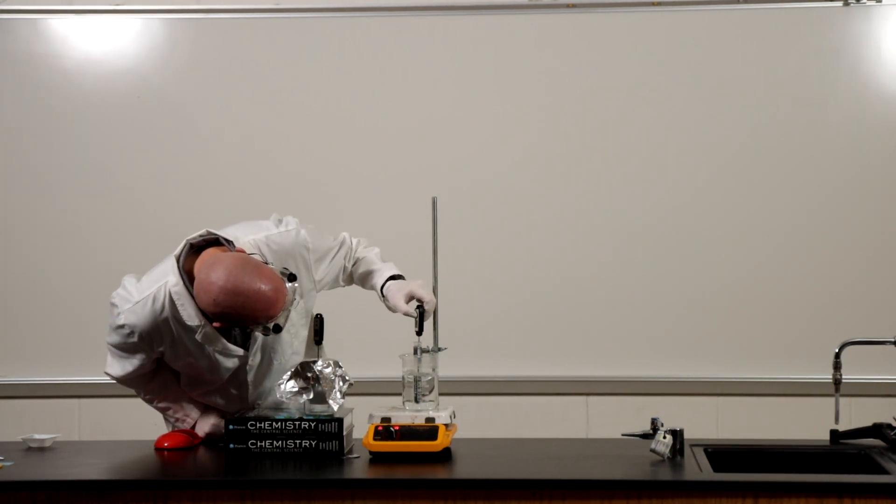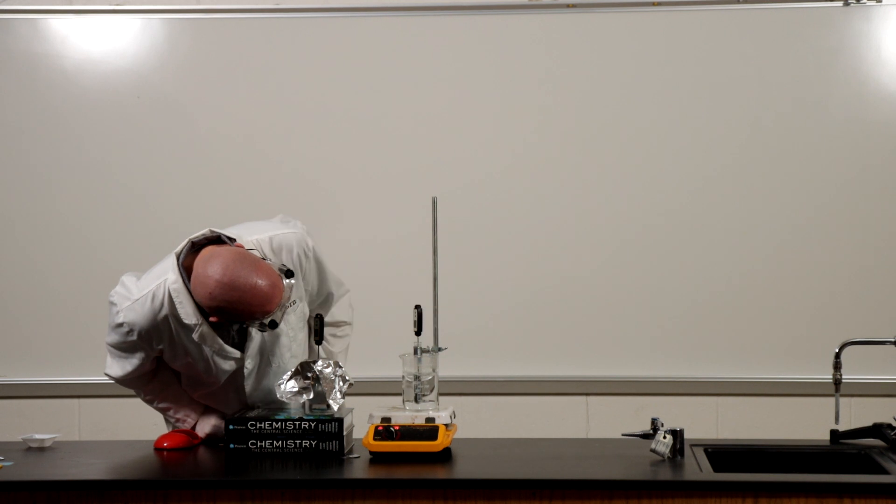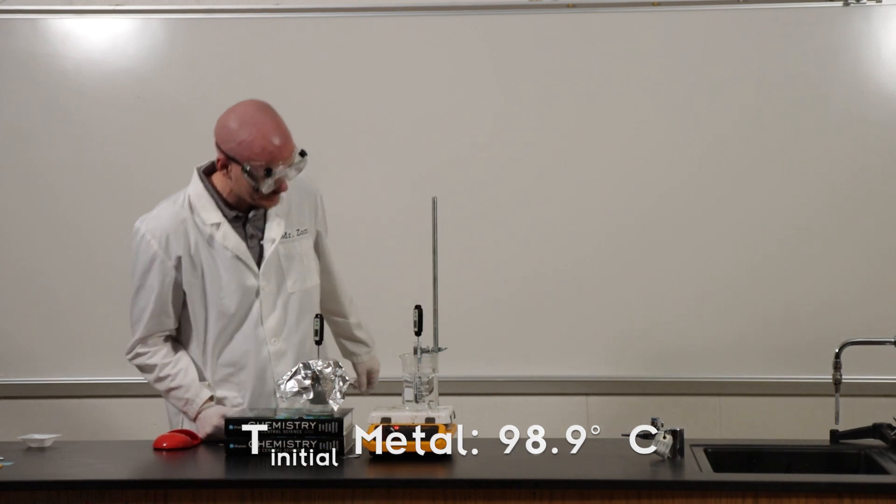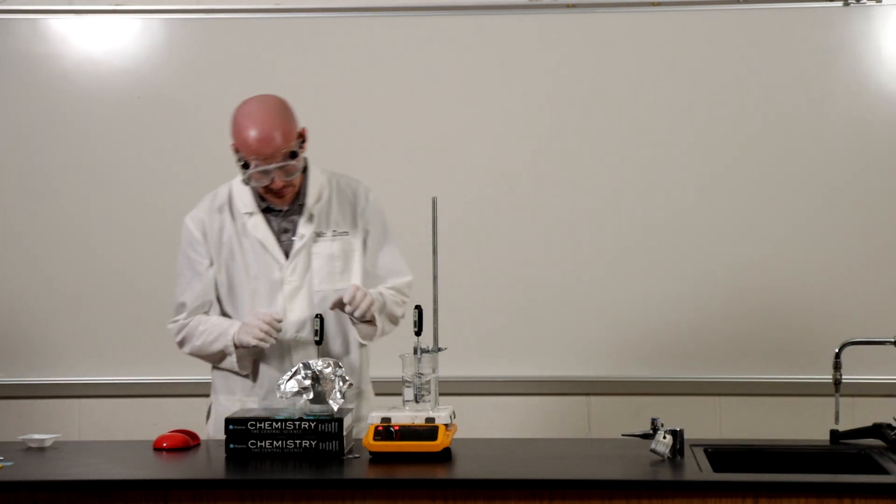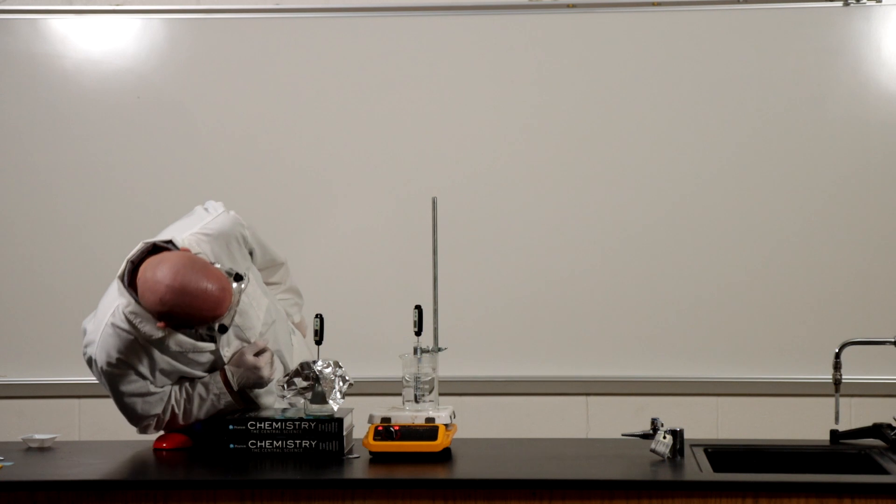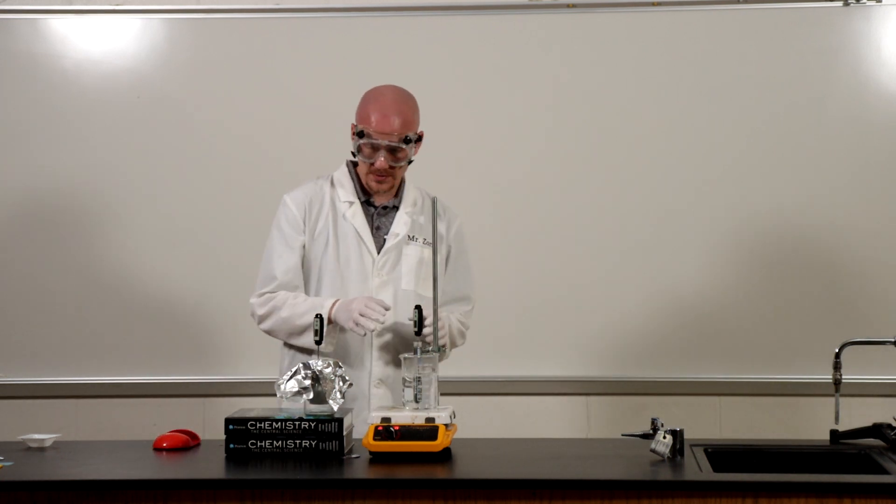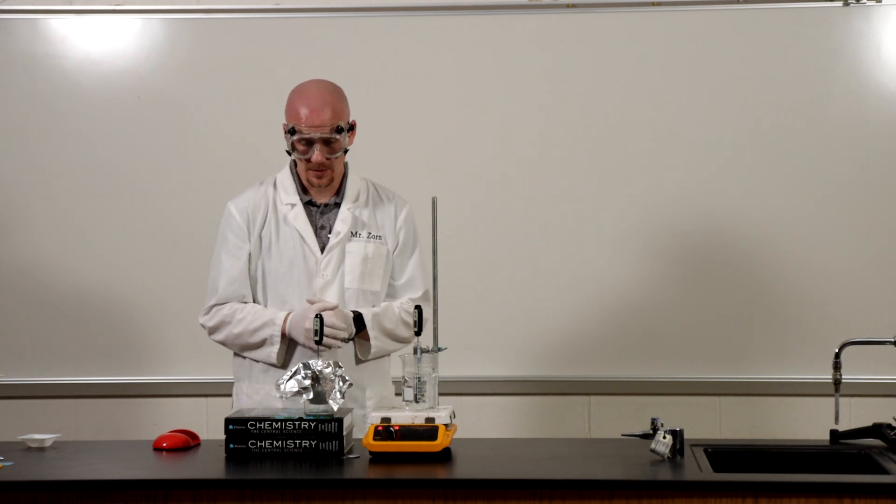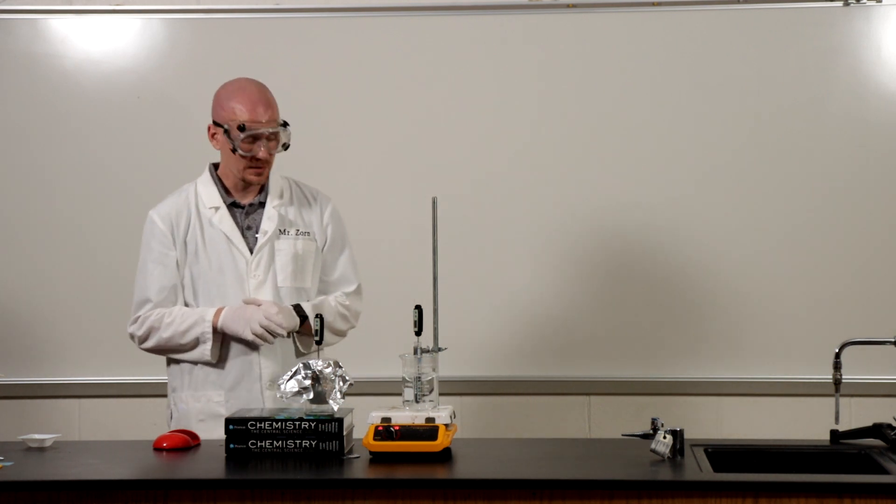The initial temperature of our metal, 98.9 degrees Celsius. So 98.9 degrees Celsius and the room temperature is 20.4. So what I'm going to do is I'm going to remove the metal and I'm going to quickly place it into the calorimeter here and we're going to watch that temperature increase.